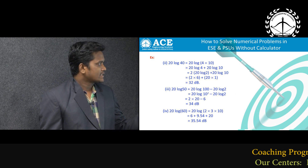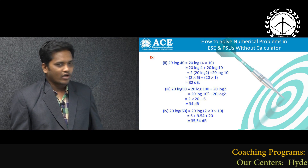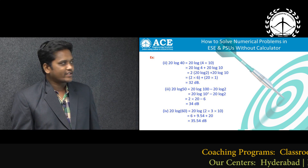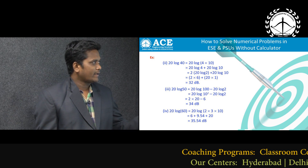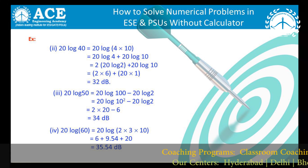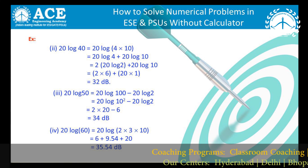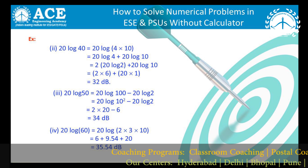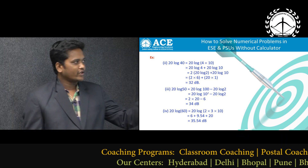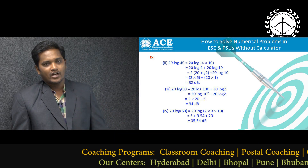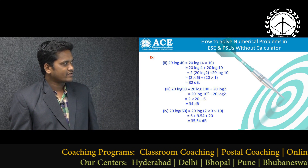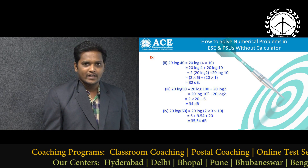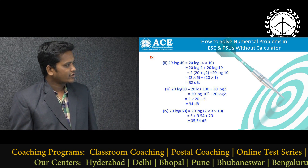Second example: 20 log 40. Log 40 can be written as log(4 × 10). Using log(ab) = log(a) + log(b), this becomes 20 log 4 + 20 log 10. Since 4 = 2², we get 2 × 20 log 2 + 20 log 10, which is 2 × 6 + 20 × 1 = 12 + 20 = 32 dB.